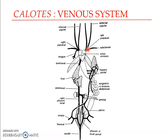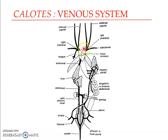Each pre-caval vein is formed by the union of the external jugular, the internal jugular, and the subclavian vein. The right pre-caval vein is also furnished by an azygous vein. The external jugular vein brings blood from the floor of the mouth and tongue, while the internal jugular vein drains blood from the brain. The subclavian drains from the forelimb, and the azygous vein drains blood from the central thoracic wall. All these parts drain into the sinus venosus through the right and left pre-caval veins.